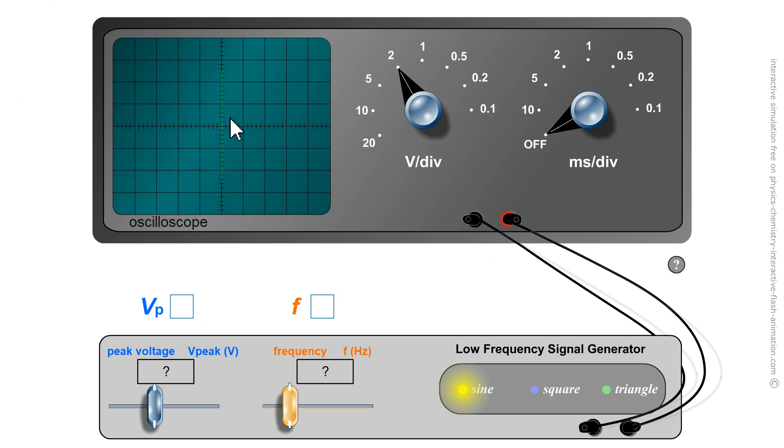So I count number of squares from 0: 1, 2, 2.5. Each division is 2 volts, so 2 volts per division times 2.5 divisions equals 5 volts.